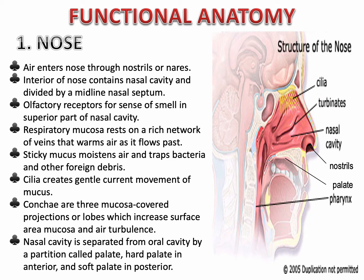In the nose, there is a rich network of veins — one of the most important functions is to warm the air as it enters the respiratory tract. There is also sticky mucus which moistens air and traps bacteria and other foreign debris. The cilia — fine hair-like structures in the posterior or upper part of the nose — create gentle current movement of mucus.